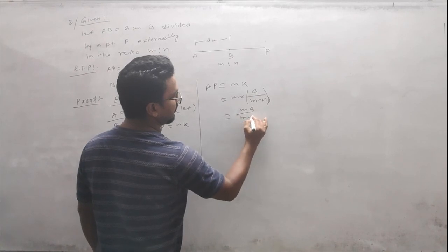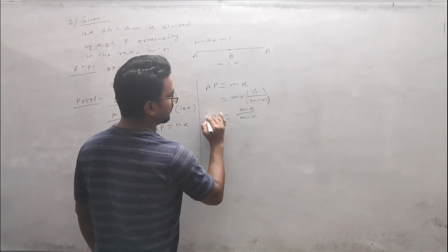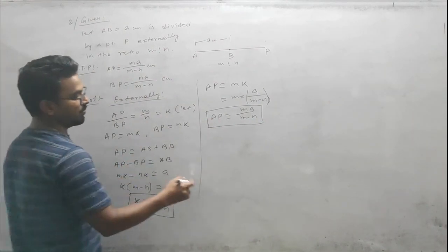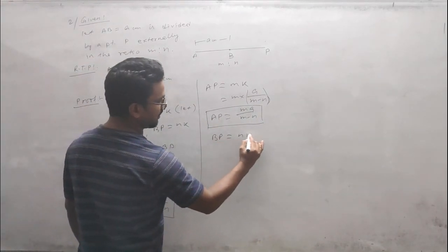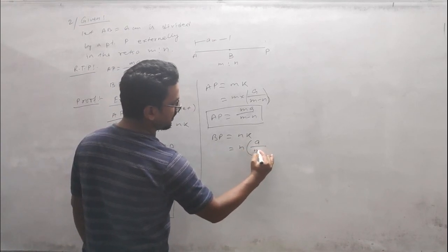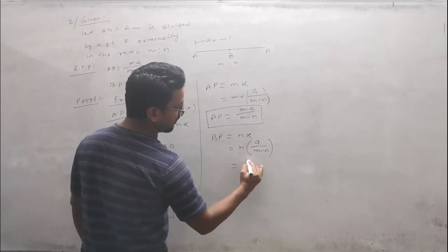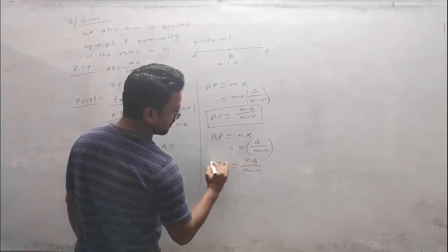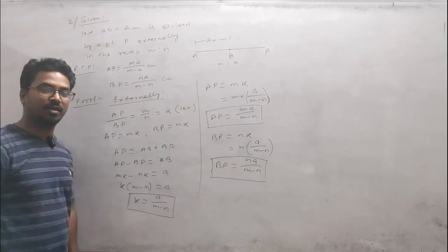Similarly for BP: BP = nk. Substituting k = a/(m-n), we get BP = n × a/(m-n) = na/(m-n).